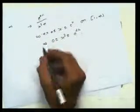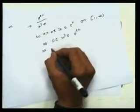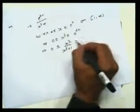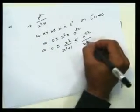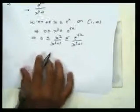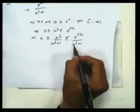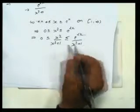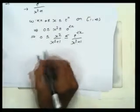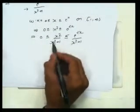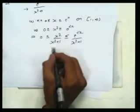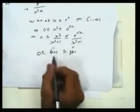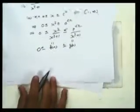We divide each term by x squared plus 1, giving us 0 ≤ x²/(x²+1) ≤ e^(2x)/(x²+1). Here the smaller function is f(x) = x²/(x²+1) and the larger is g(x) = e^(2x)/(x²+1), with 0 ≤ f(x) ≤ g(x).